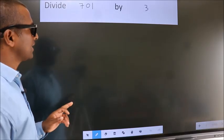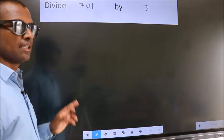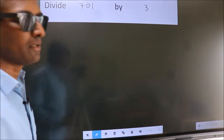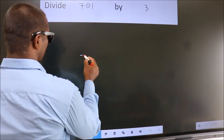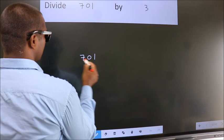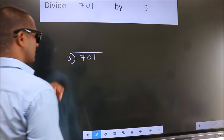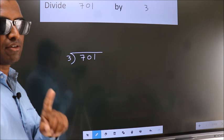Divide 701 by 3. To do this division, we should frame it in this way. 701 here, 3 here. This is your step 1.